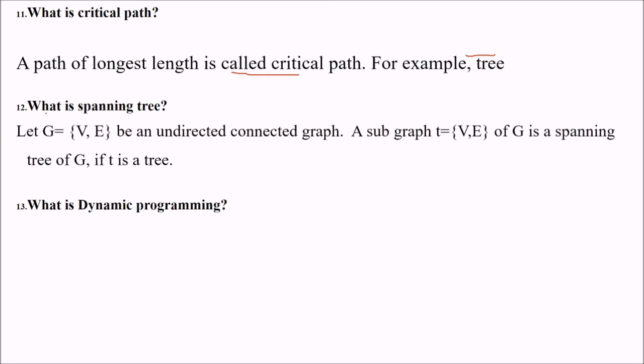What is spanning tree? If we have a graph with V and E vertices and edges, it is an undirected connected graph. You don't have directions. So a subset of this graph is a spanning tree of G if this tree is a tree. It has to be a subset of this graph only but it needs to be following the properties of tree also.